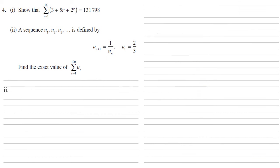For part two, we've got a sequence u1, u2, u3, defined by u n plus 1 is equal to 1 over u n, and u1 is equal to 2 thirds. Using this, we're going to find the exact value of the sum from r is 1 to 100 of ur.